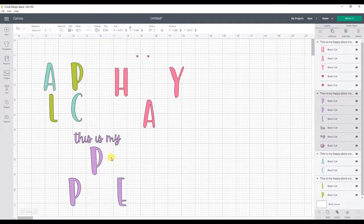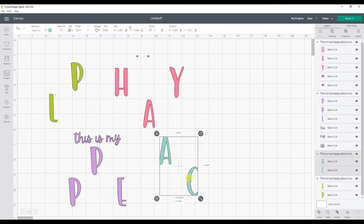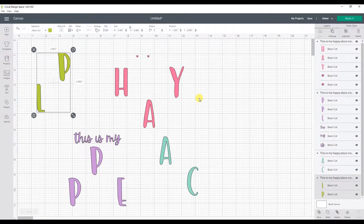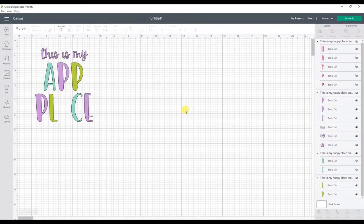Everything else is going to be cut individually so that I don't waste any material. Right now, the purple part of the design is grouped together, but in order to attach just the this is my part, I need to ungroup the purple part of the design. Let me undo my moves here so the design is back together. Now in my layers column, I'm going to select the purple group and click ungroup.